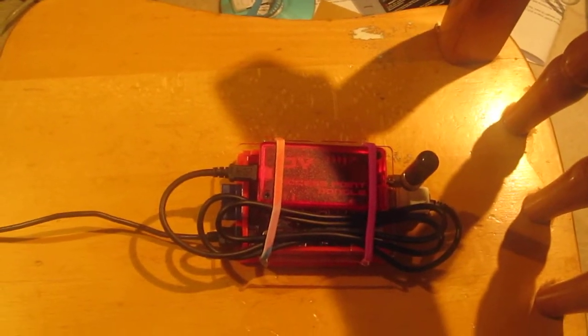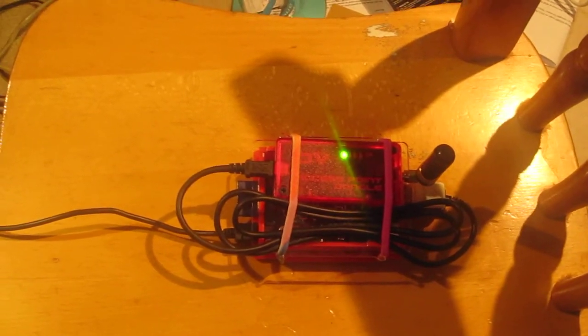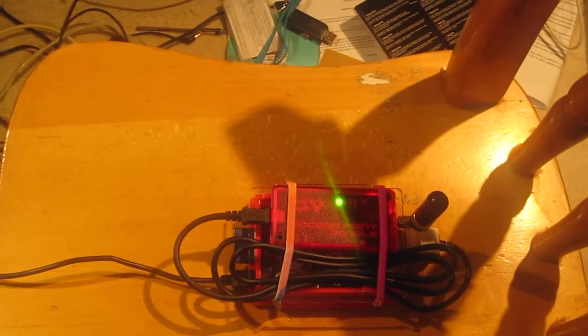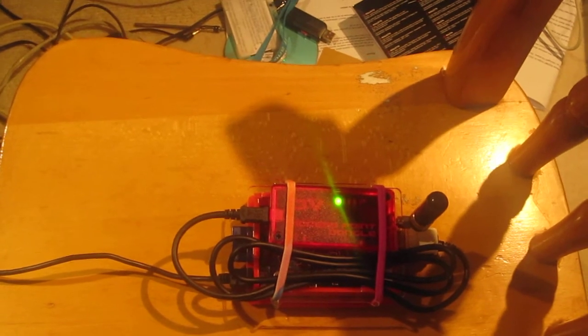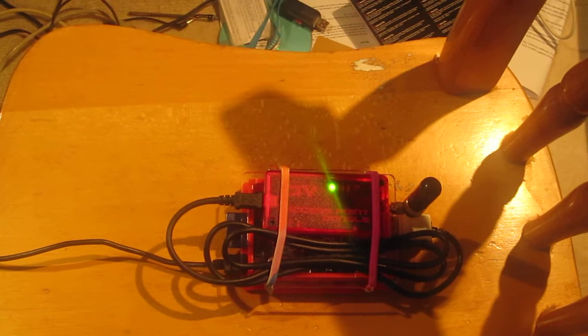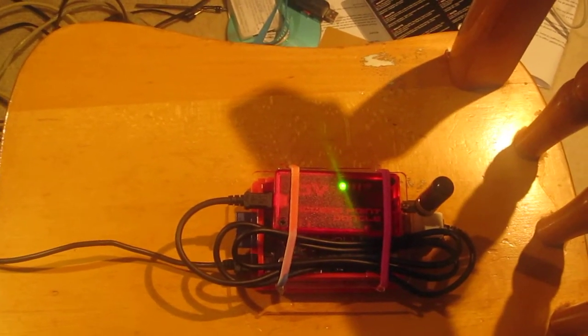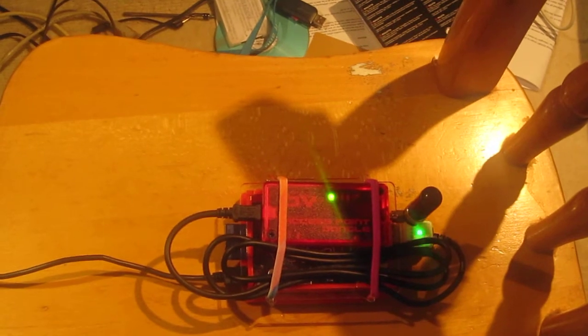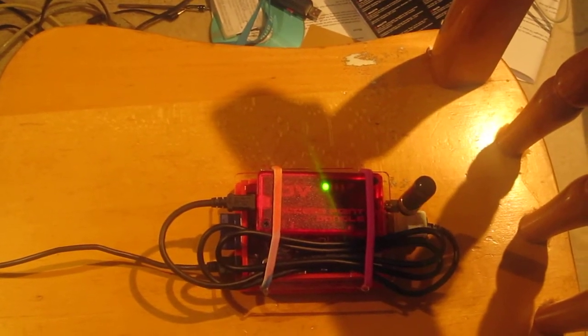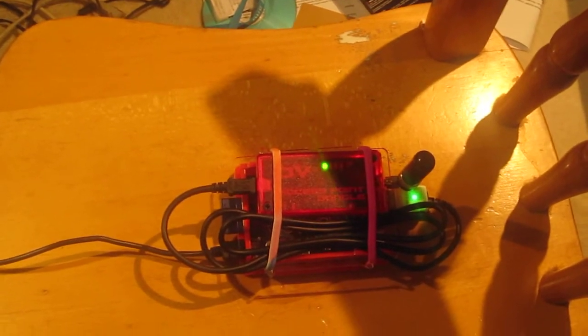Right, what we're looking at here is simply a Raspberry Pi connected to the DVAP dongle. The Raspberry Pi has two USB ports - one is connected to the dongle and one is connected to the Wi-Fi dongle.